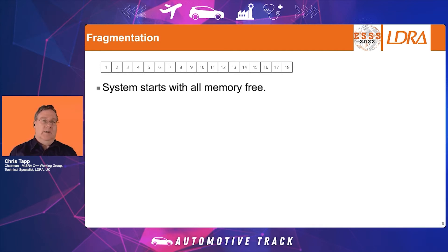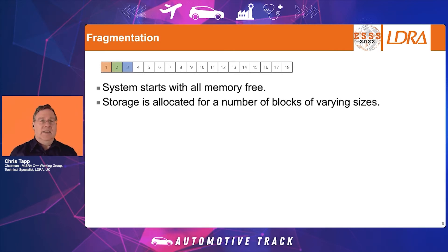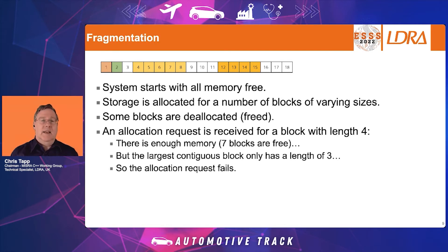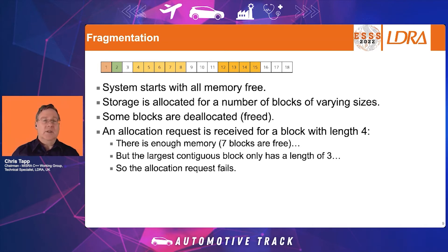Typically when a system starts up, all the memory is free. As the program runs, storage is allocated for blocks of varying sizes, and blocks may also be freed. If we then receive an allocation request for a block of length four, but the memory map shows the largest contiguous free block only has a length of three, we are not able to satisfy that request, resulting in an allocation failure with the application being told there is insufficient memory available.